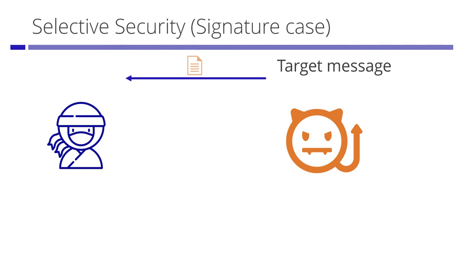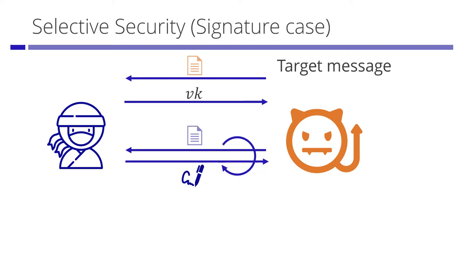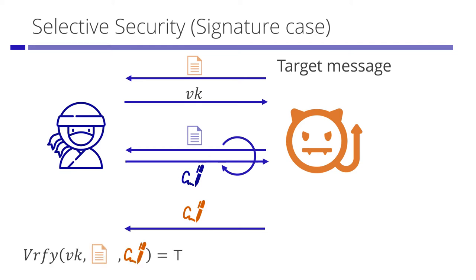I explain the selective security game using the signature case. The adversary declares the target message at the beginning of the game. Then the challenger sends a verification key to the adversary. Next, the adversary sends signing queries to the challenger. When a message is queried, the challenger answers a valid signature for the queried message. At some point, the adversary outputs a forged signature for the target message. If the forged signature is a valid signature for the target, the adversary wins.